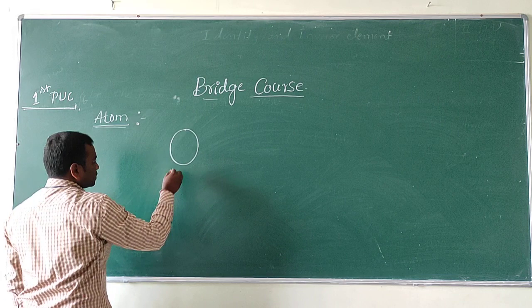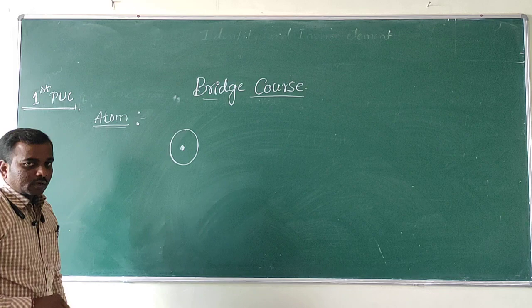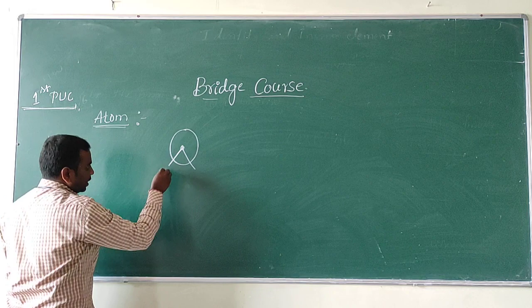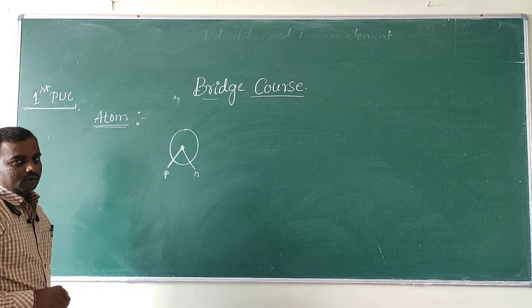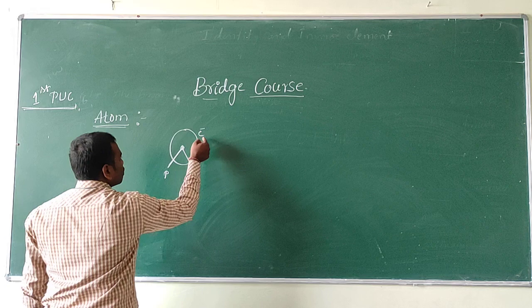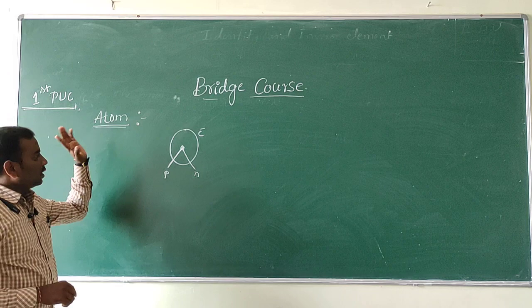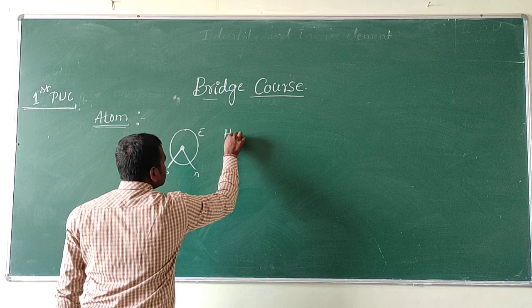See here, this is the atom with a nucleus. In this nucleus, it contains both protons and neutrons. Electrons are revolving around the nucleus.